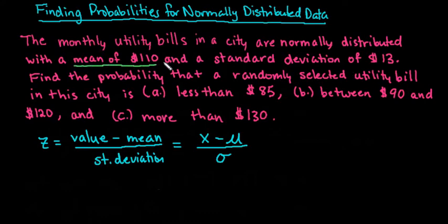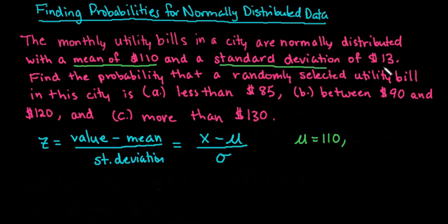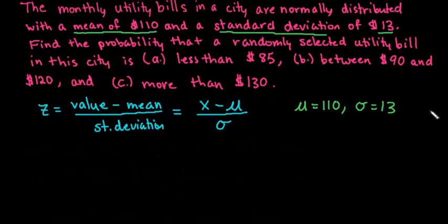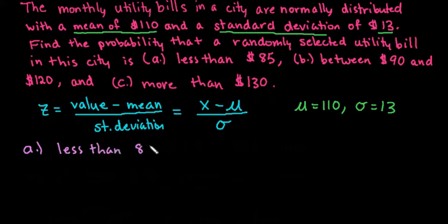Our mean is 110 and the standard deviation is 13, so sigma equals 13. Those are the two important things we have to pull from every problem to calculate probabilities in a normal distribution. The first one we are finding is the probability that the bill is less than $85. In symbol notation, this is the probability that the random variable x is less than 85.